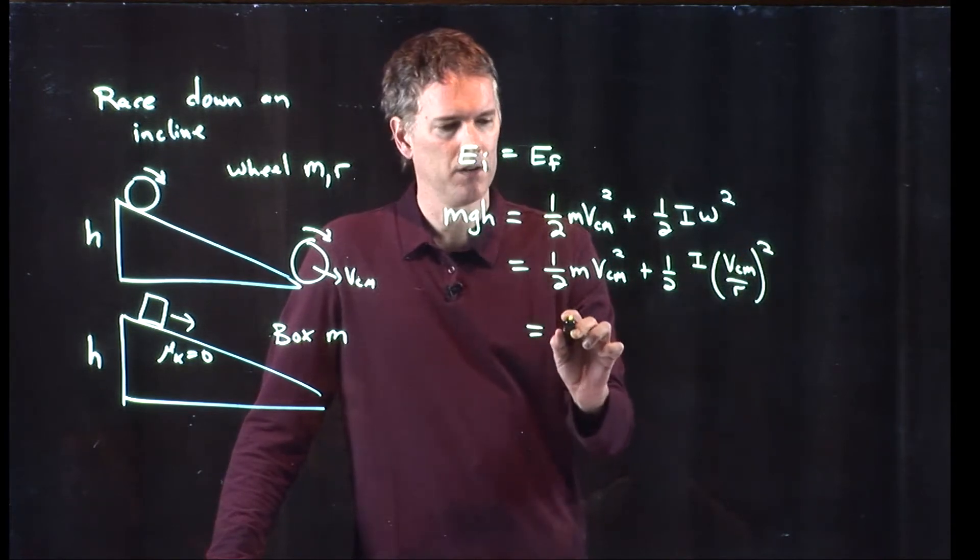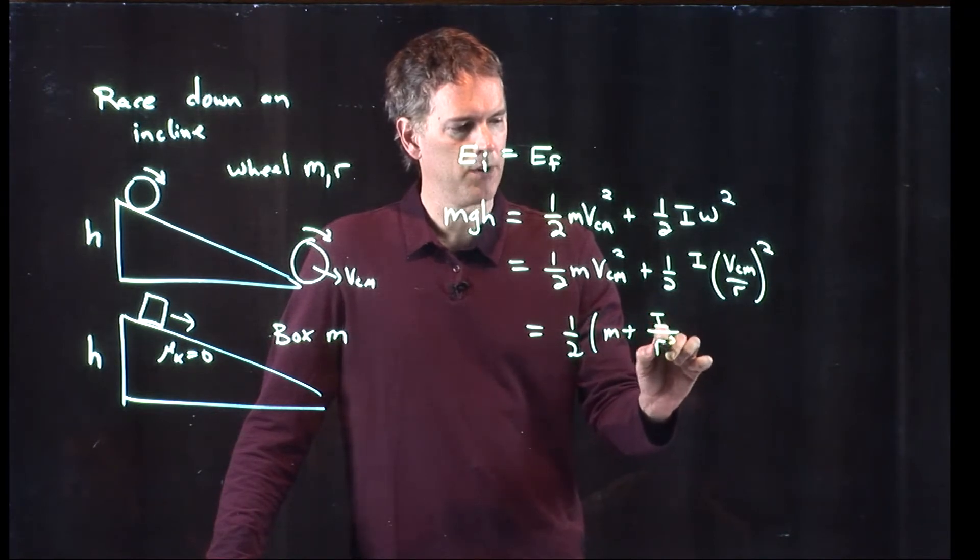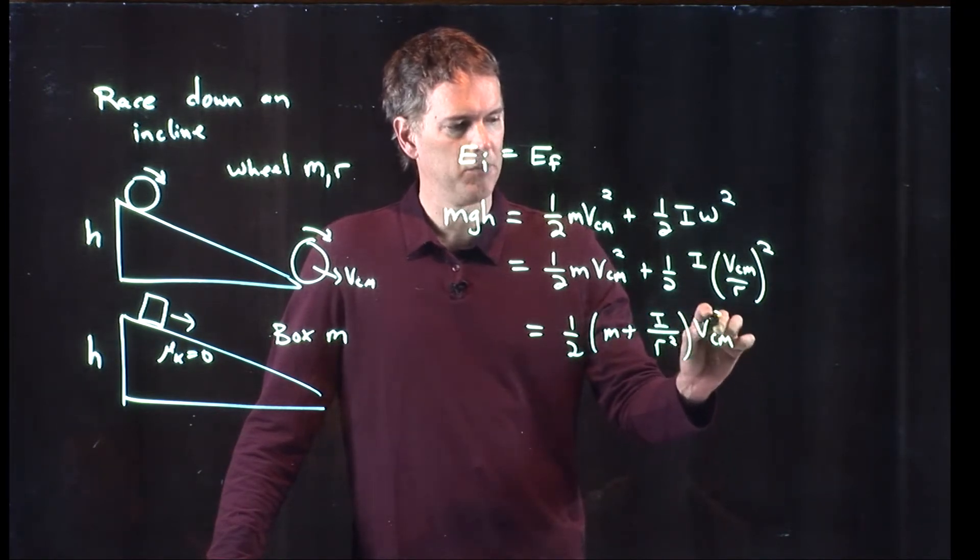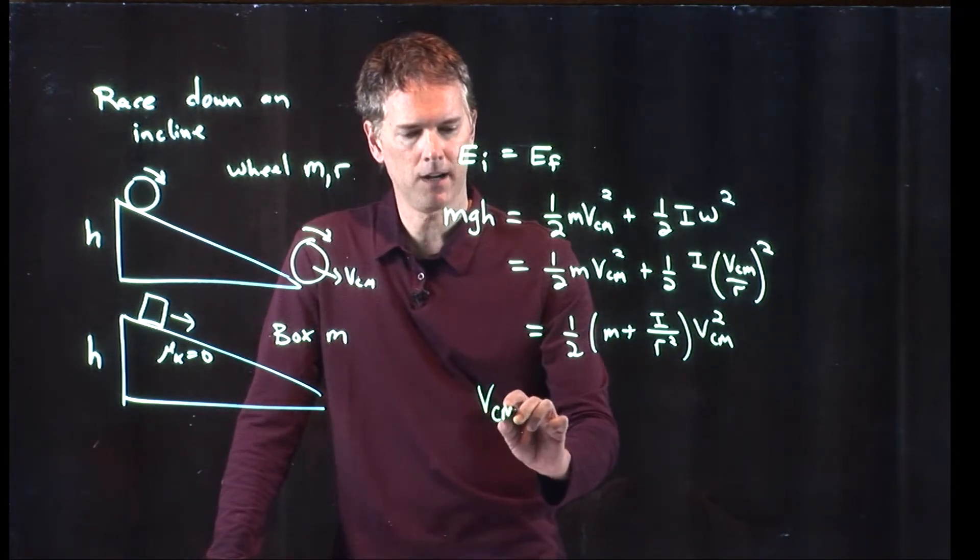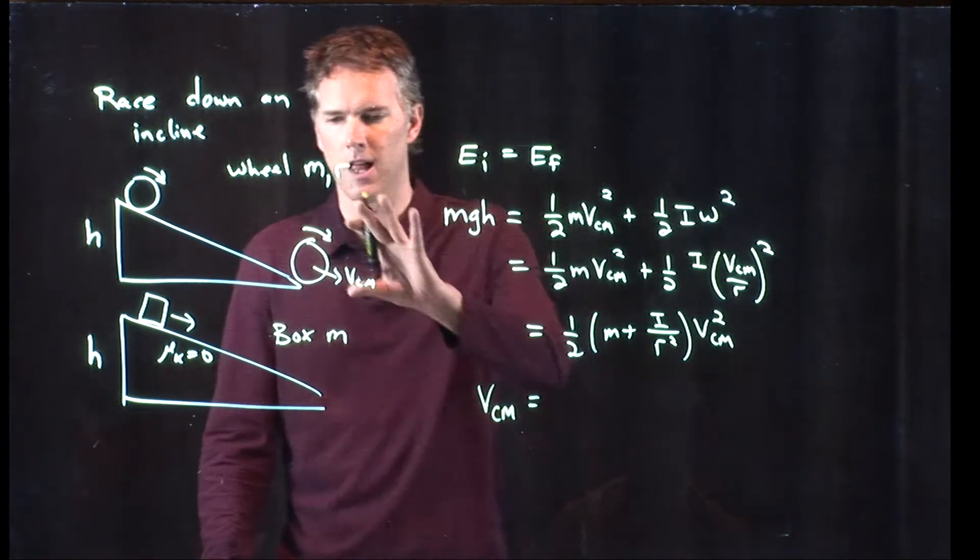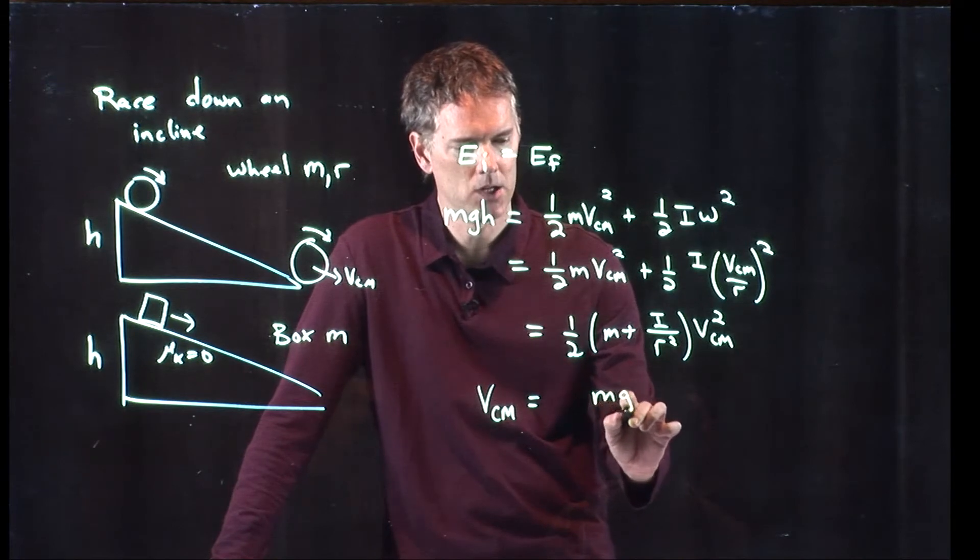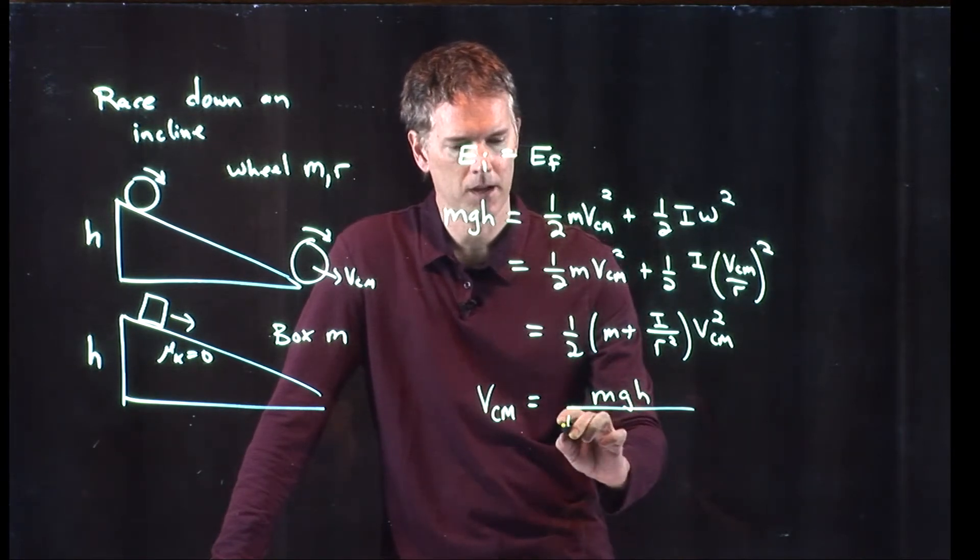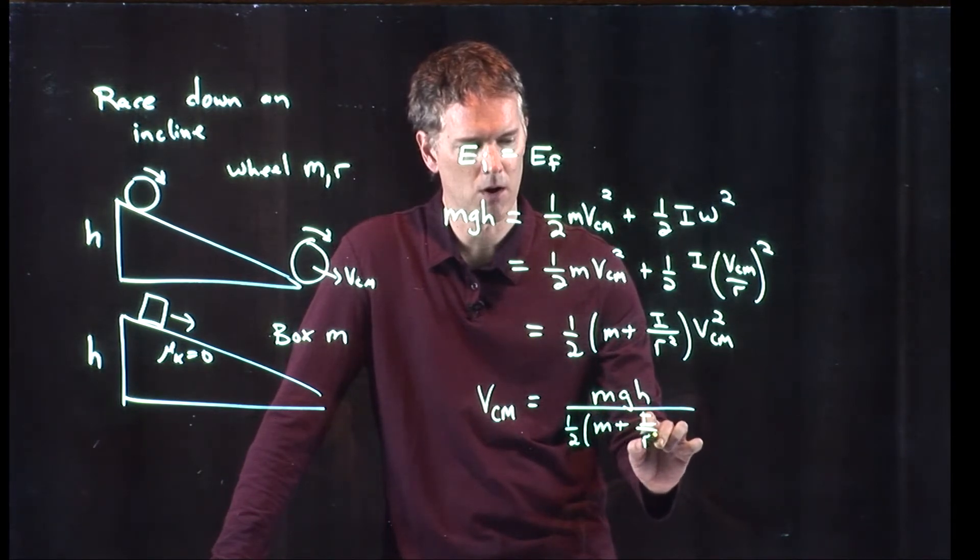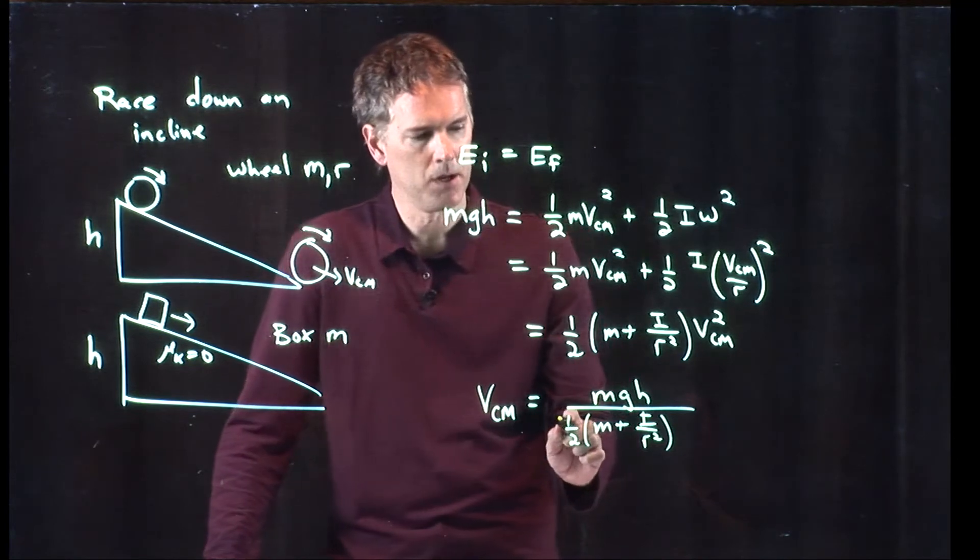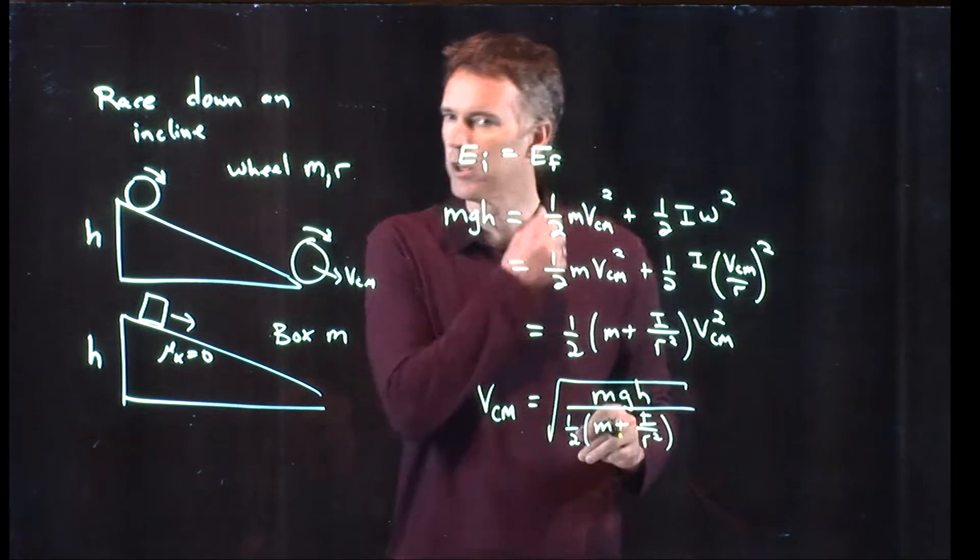We can lump it together: m plus I over r squared, all of that times vcm squared. And now you get the velocity of the wheel. How do we do it? We have mgh, we're going to divide that whole thing by one-half m plus I over r squared, and then take the square root of the whole thing. We just solved this last equation for vcm.